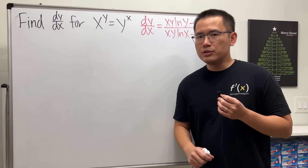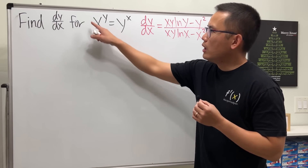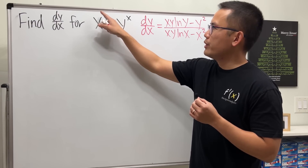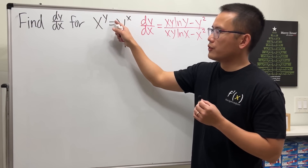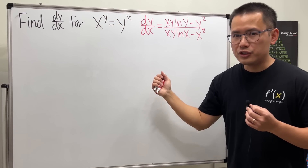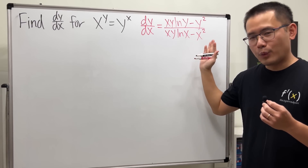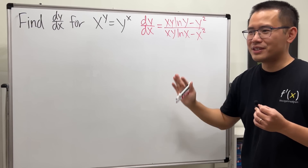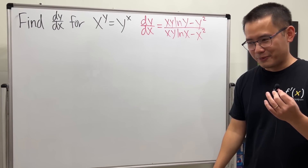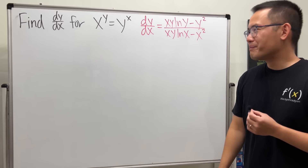In my video I took the natural log of both sides first so that we can bring the exponents to the front, and then we do implicit differentiation. I will have the link to my 100 derivatives video in the description so you have practice after this video.